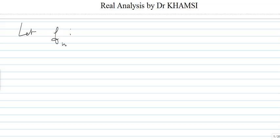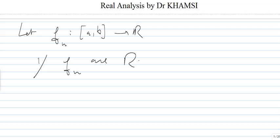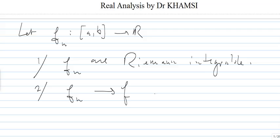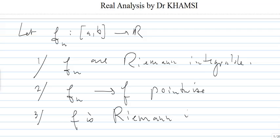So in any case, what we have here — let's go back to the assumptions. We have a sequence of functions defined on [A, B]. Assumption one: the FNs are Riemann-integrable. Two: we assume that FN converges to F pointwise. Three: we assume that F is Riemann-integrable. These are all strong assumptions.